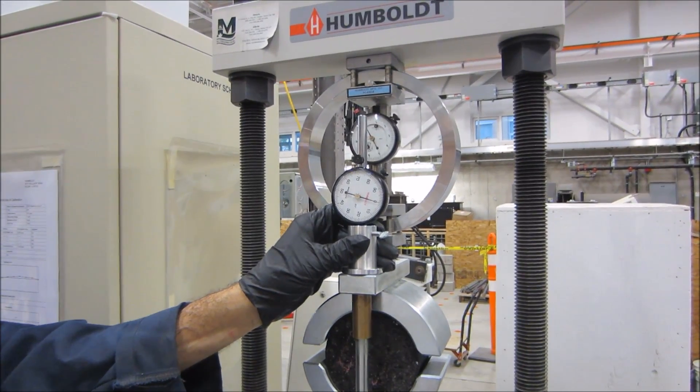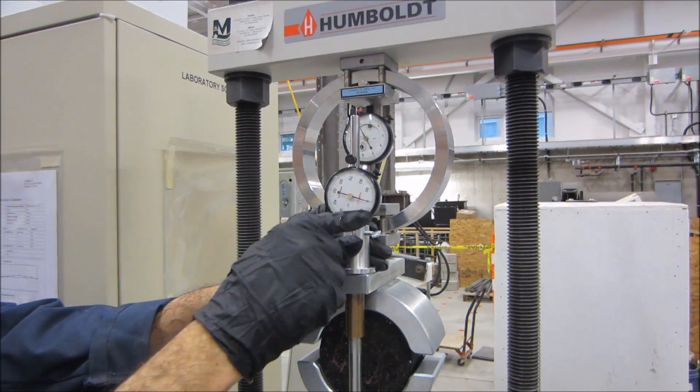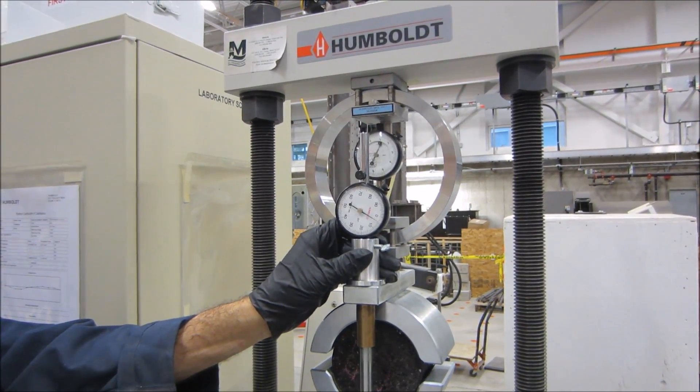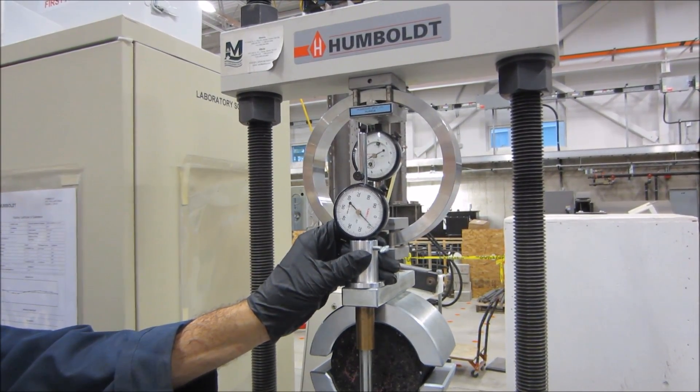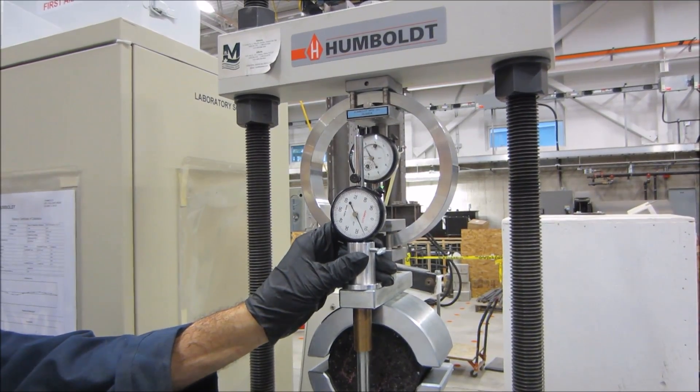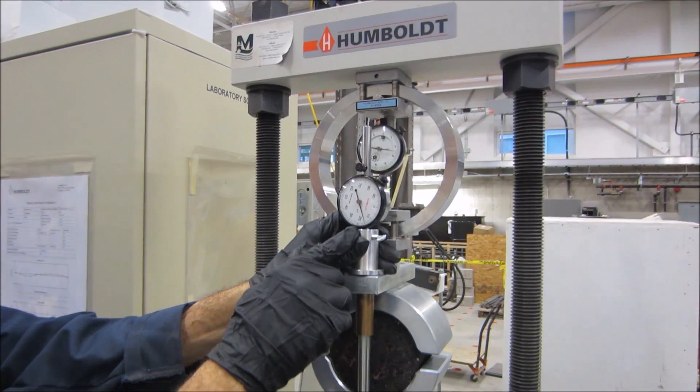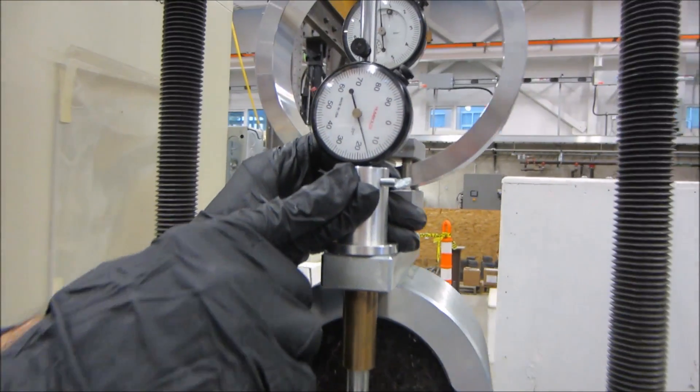Apply a load at a constant rate of 50 mm per minute and count the number of full rotations made on the stability gauge until it slows down. Once the load starts to decrease, stop the application of load and take readings for the maximum load and the corresponding deformation.